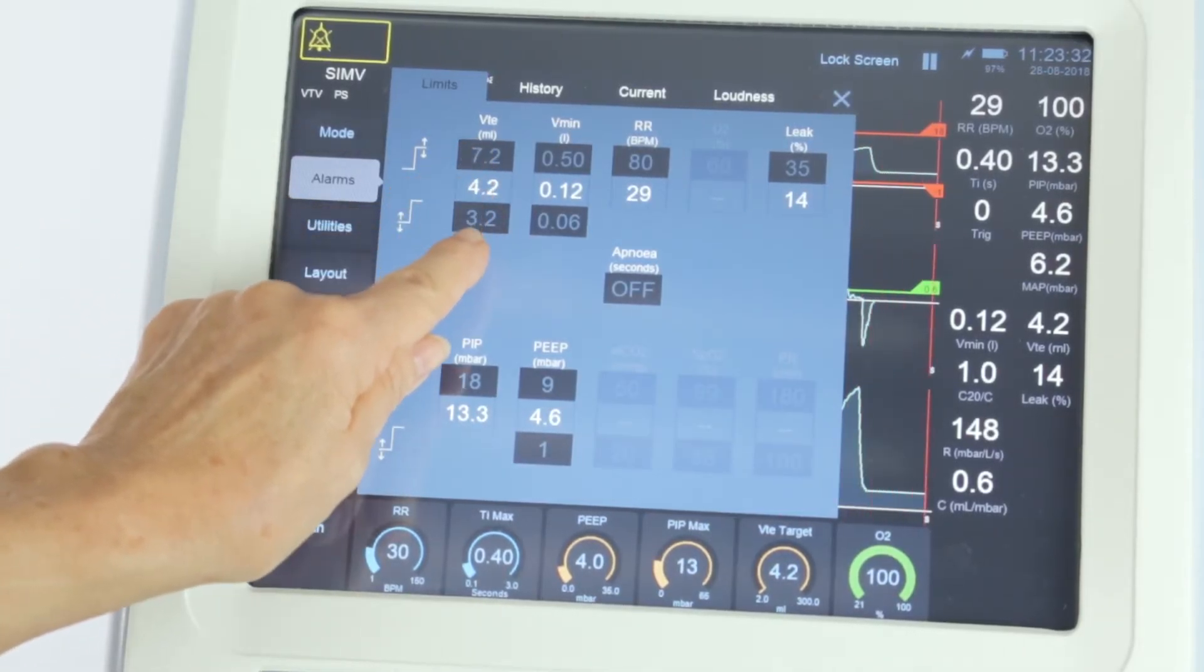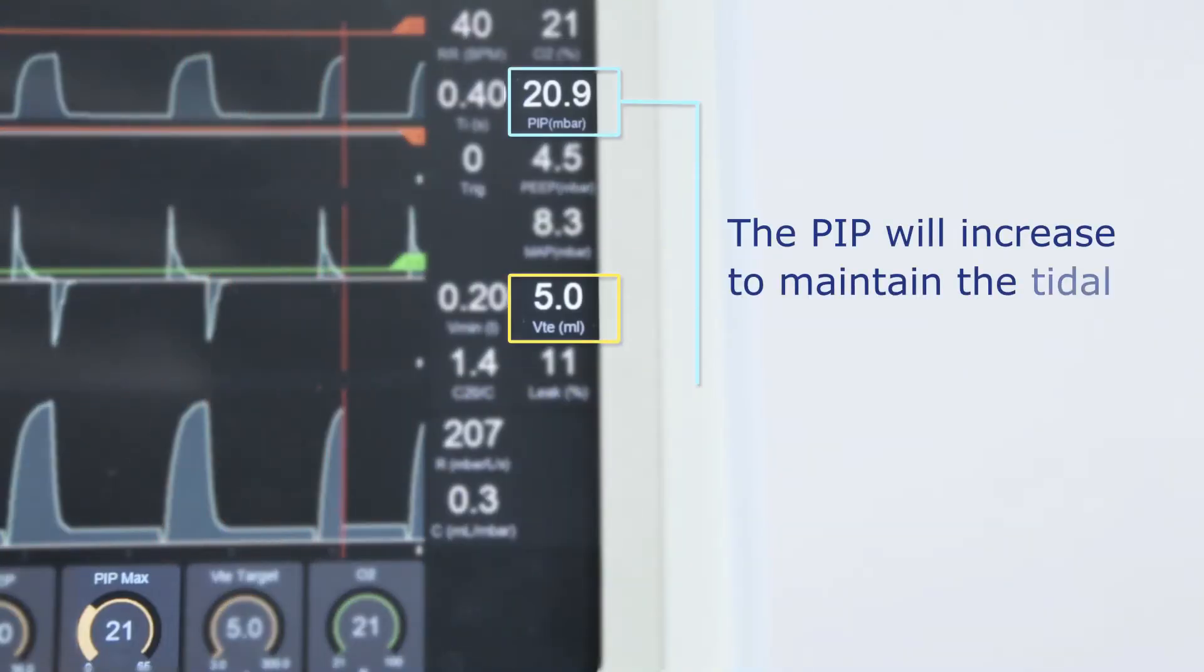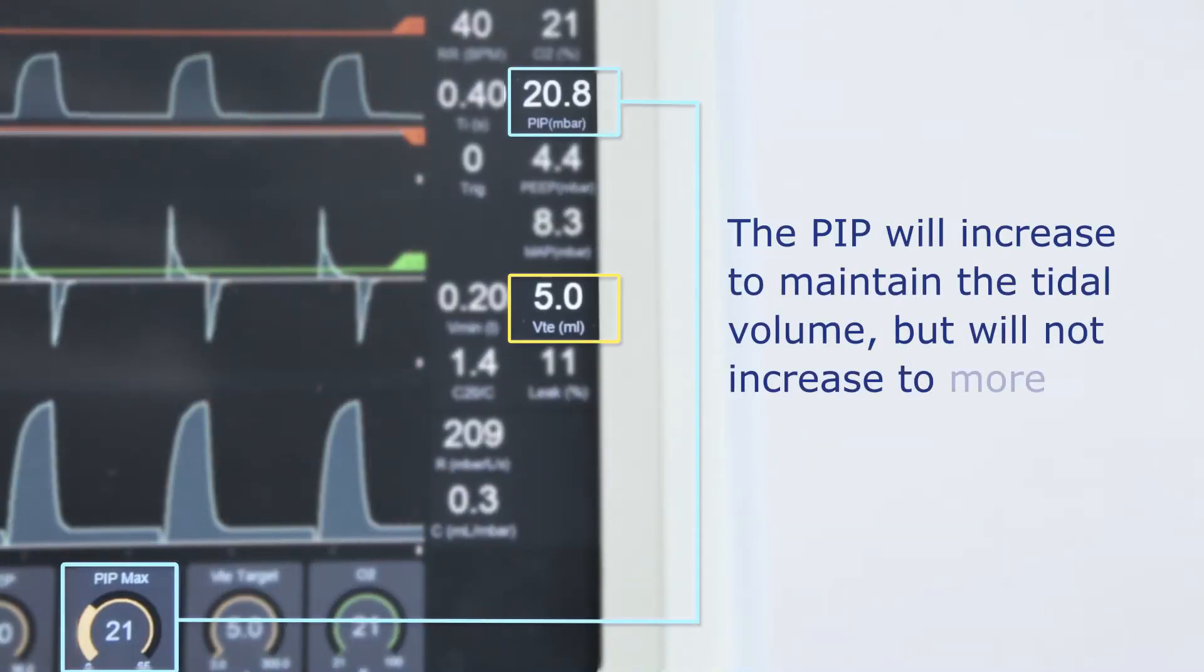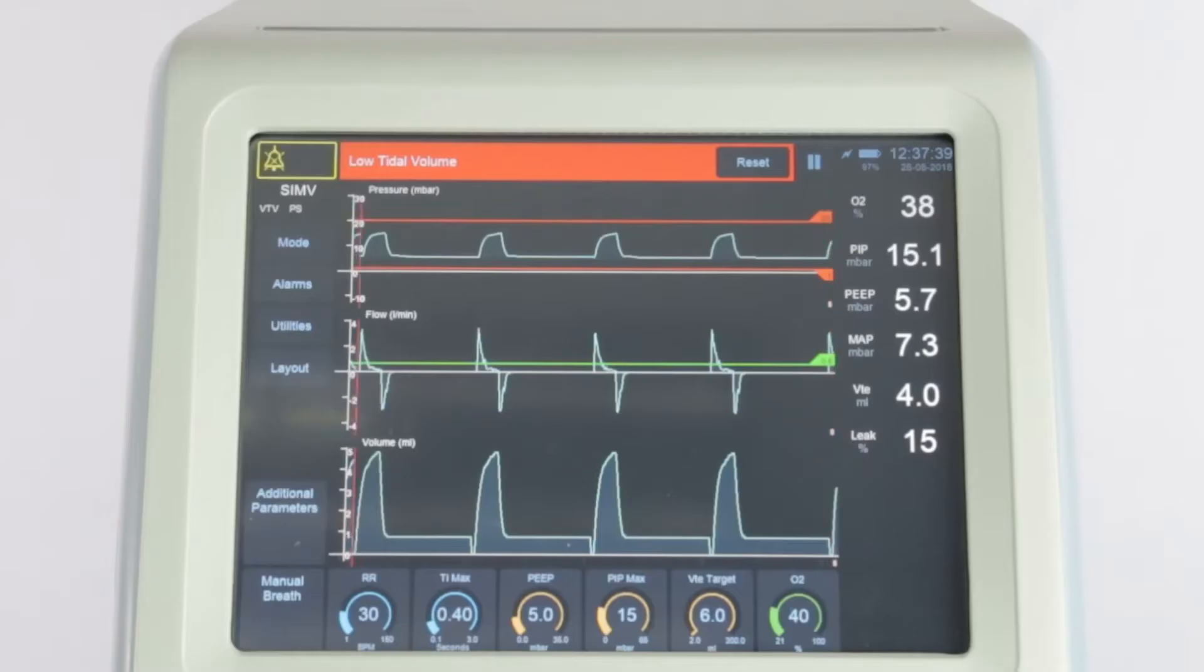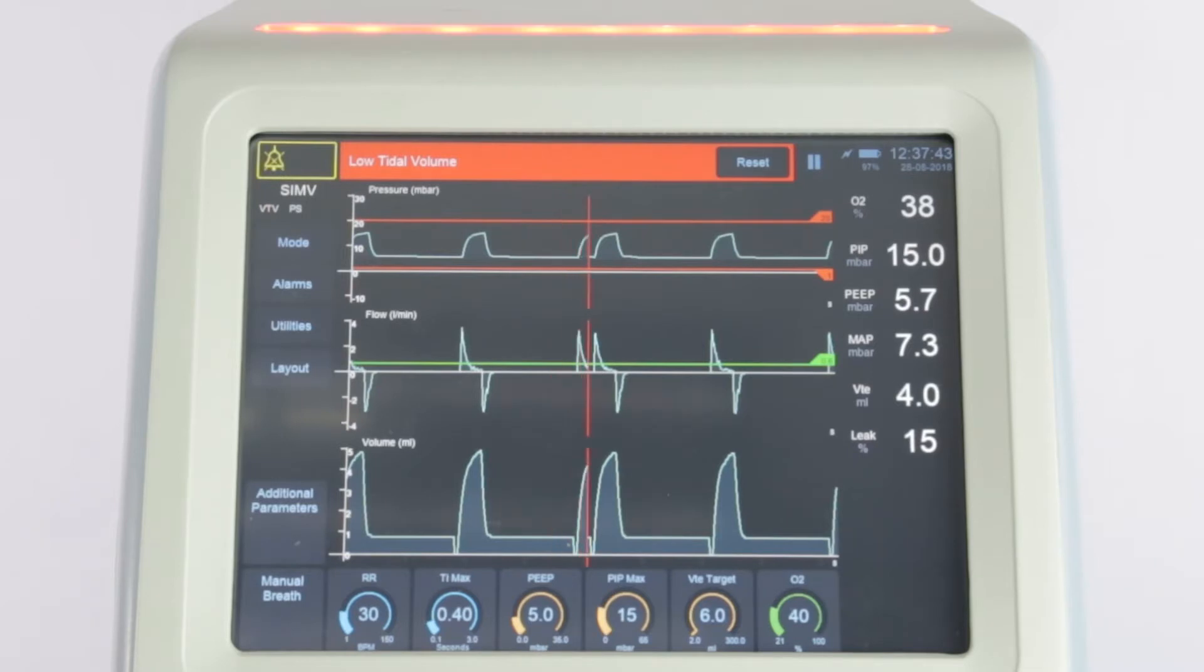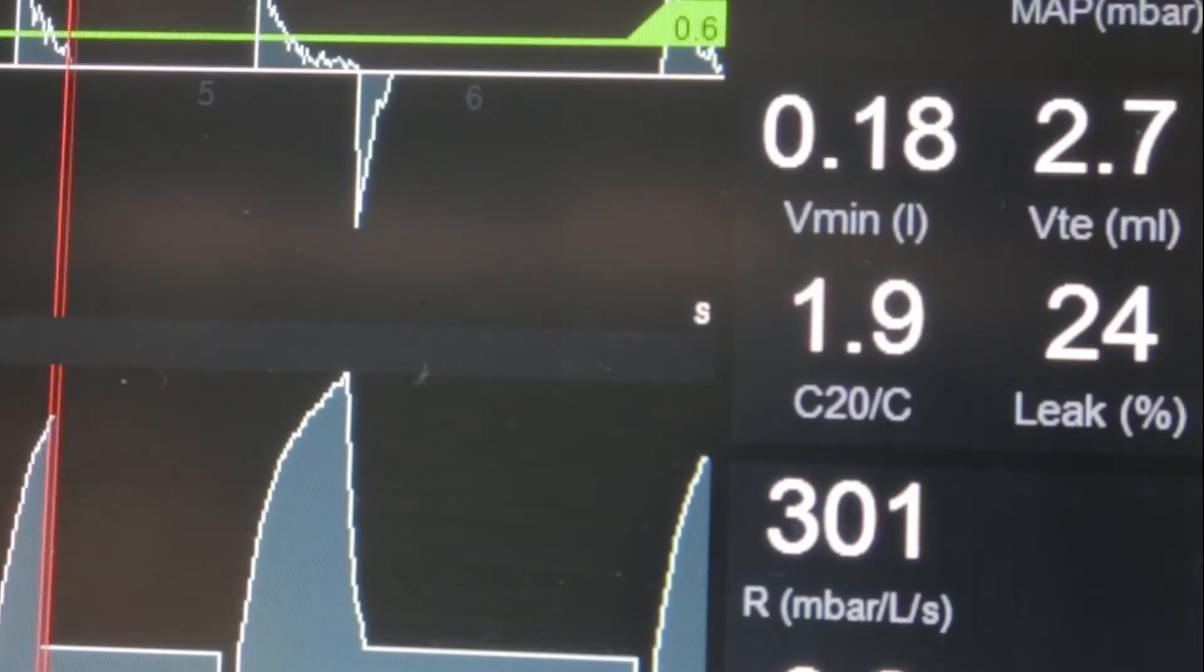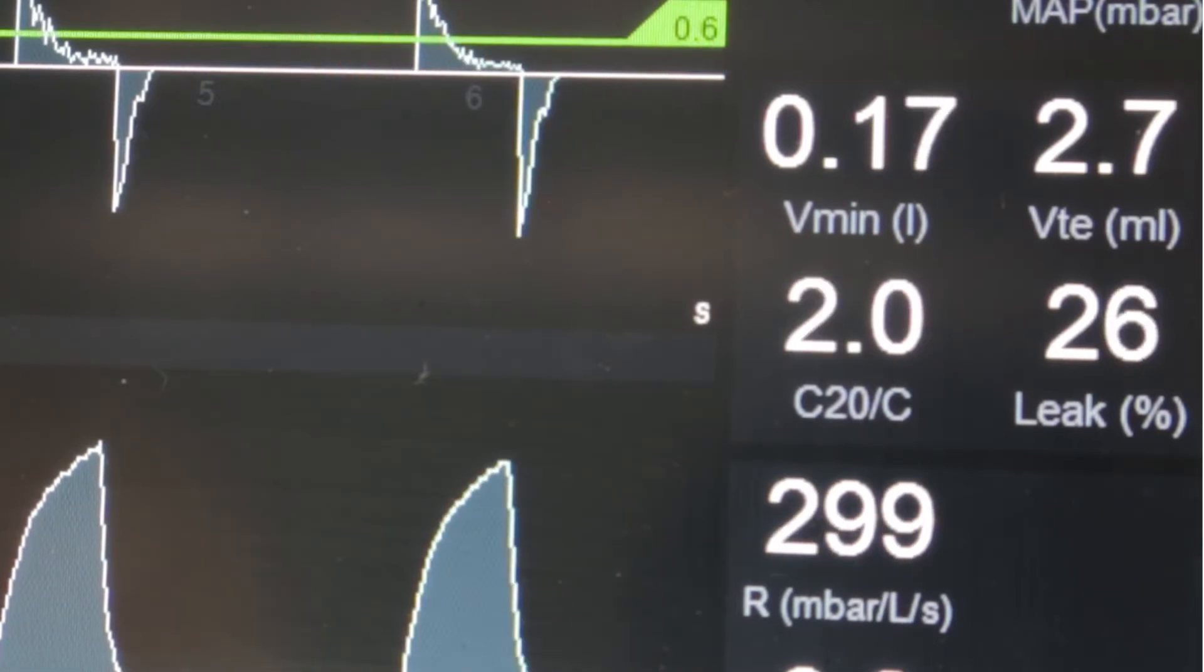Should the resistance increase, the PIP will increase to maintain the tidal volume, but will not increase to more than the maximum PIP. If the tidal volume cannot be maintained by the maximum PIP, a low tidal volume alarm will be activated. It could be due to increased resistance or an increase in the leak.